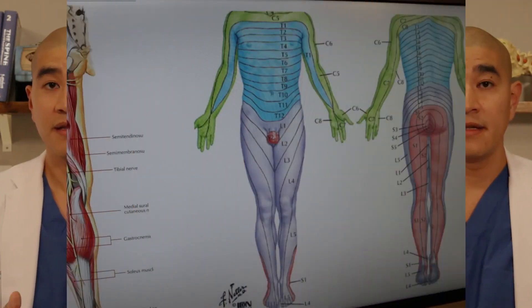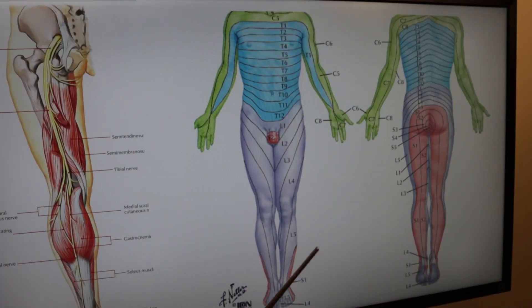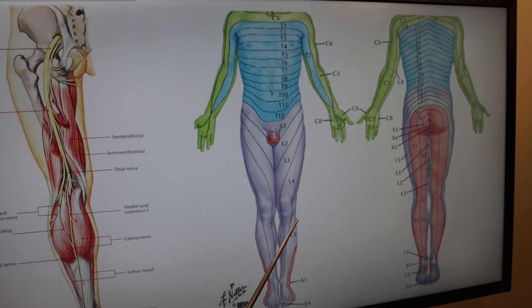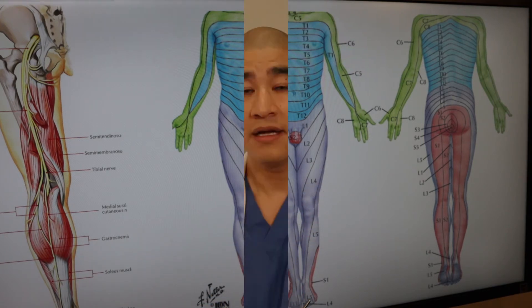Most commonly a pars fracture happens at L5 — occasionally at L4, but mostly at L5 — and the L5 nerve is the one most commonly involved. The L5 nerve goes around the outside of the leg to the big toe. Many patients with an isthmic spondylolisthesis present with an L5 radiculopathy, which just means symptoms in the L5 nerve distribution.